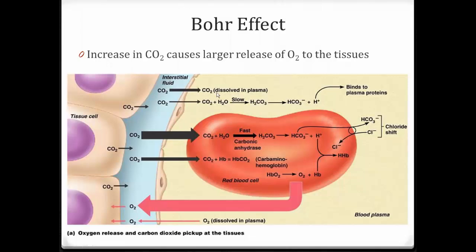Some CO2 does dissolve in the plasma, and some CO2 combines with water in the plasma forming carbonic acid and bicarbonates, but that's a very slow reaction without carbonic anhydrase. What we want to focus on is inside the red blood cell. Some CO2 combines with hemoglobin forming carbaminohemoglobin, but the large majority of CO2 diffuses into the red blood cell, forms carbonic acid, and dissociates into bicarbonates and hydrogen ions. Bicarbonates diffuse out, chloride comes in — that's the chloride shift.